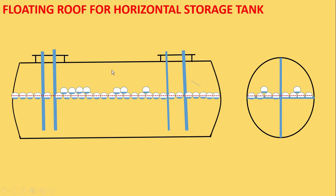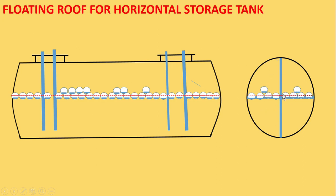After placing these balls, it will look like this. If too many balls are placed, they may form a second layer. If there are fewer balls, only some areas will form a second layer. The balls will automatically adjust with respect to the various pipes and stiffeners available inside the tank.